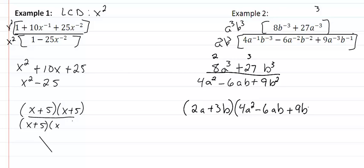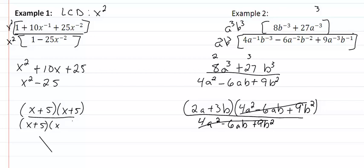And this will all be over 4 a squared. Now again we're all over 4 a squared minus 6 a b plus 9 b squared. So our common factor here is the 4 a squared minus the 6 a b plus 9 b squared. Leaving us with 2 a plus 3 b. And we're done.